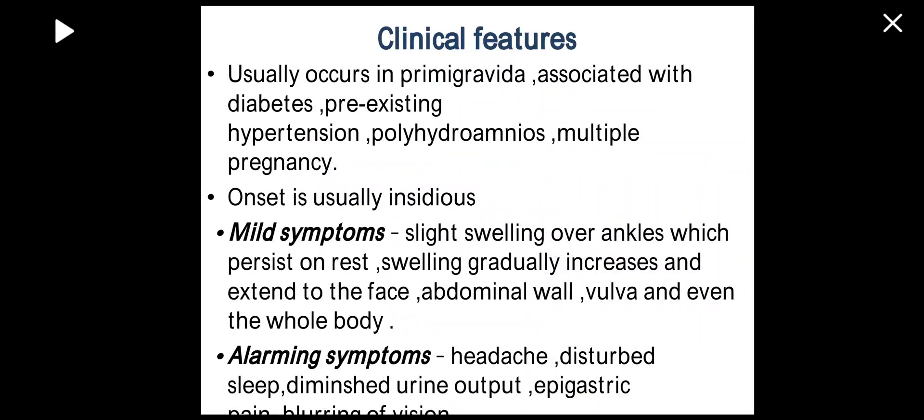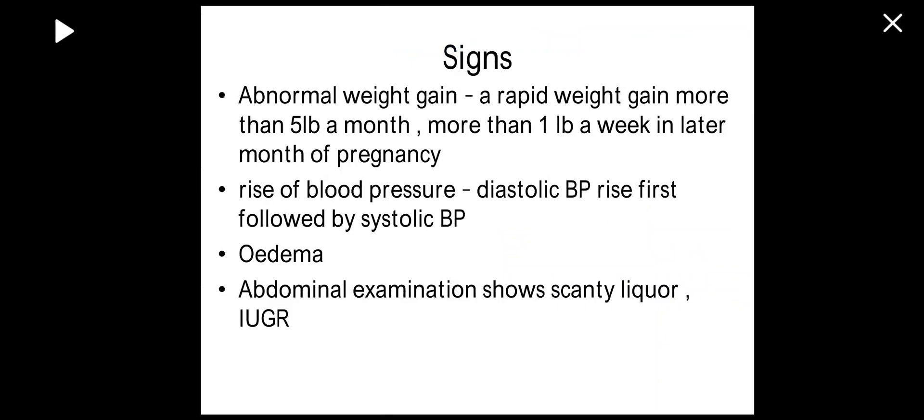From history, preeclampsia can occur in primigravida, those with diabetes, or pre-existing hypertension. Mild symptoms include edema — swelling over the ankles that persists even on rest — which gradually increases and extends to the face, abdominal wall, vulva, and even the whole body. Alarming symptoms include epigastric pain, headache, blurring of vision, and diminished urine output.